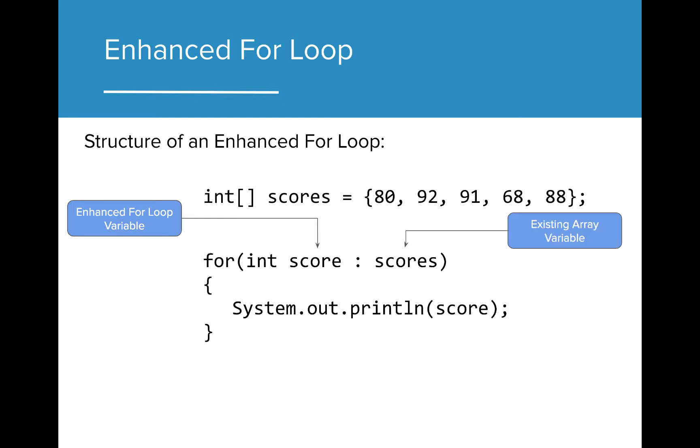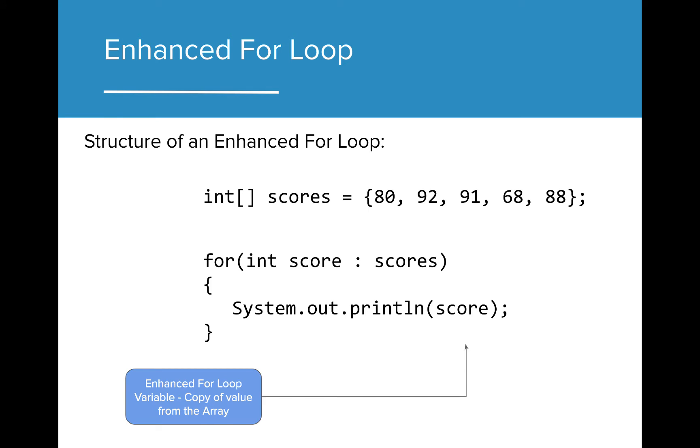After the enhanced for loop variable is defined, we finish our header by placing a colon and then the name of the array. Inside the loop, the enhanced for loop variable is assigned a copy from the array without using the array index. Making changes to the enhanced for loop variable does not change the original value in the array.